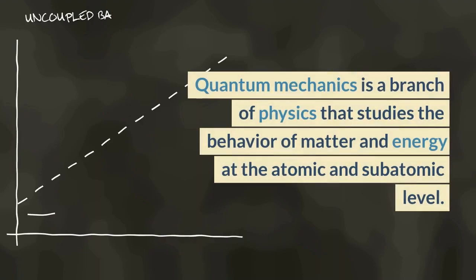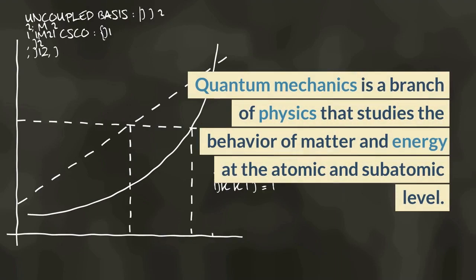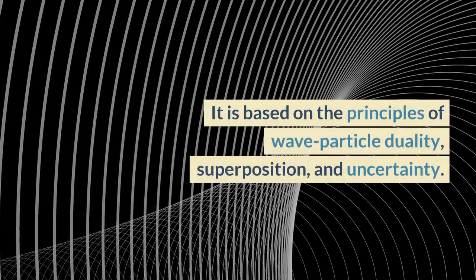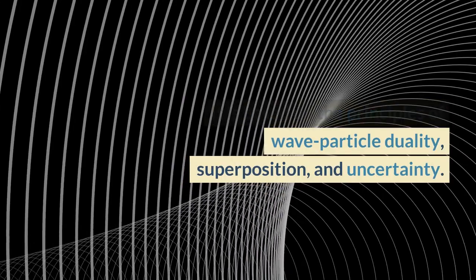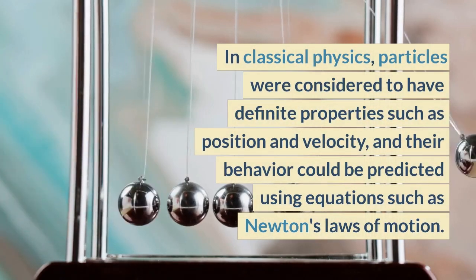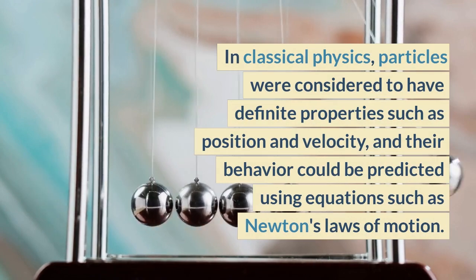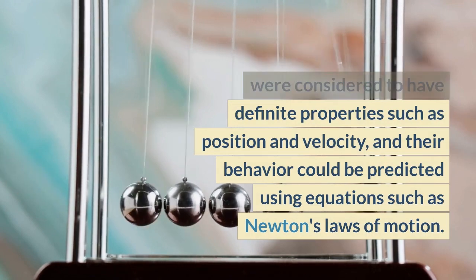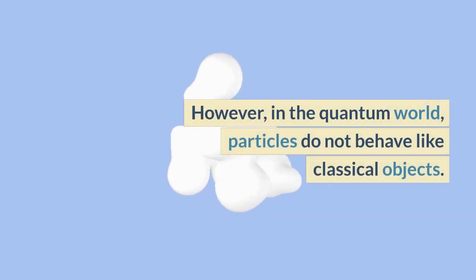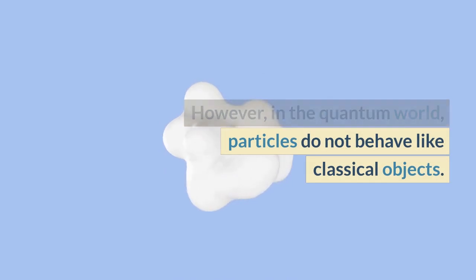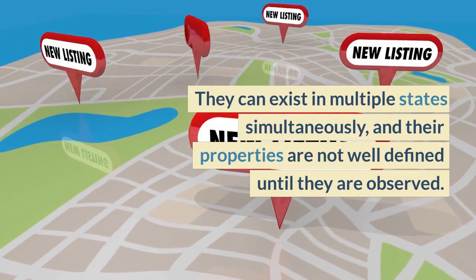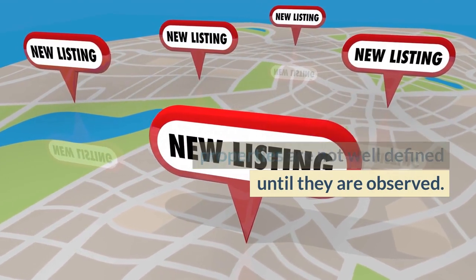Quantum mechanics is a branch of physics that studies the behavior of matter and energy at the atomic and subatomic level. It is based on the principles of wave-particle duality, superposition, and uncertainty. In classical physics, particles were considered to have definite properties such as position and velocity, and their behavior could be predicted using equations such as Newton's laws of motion. However, in the quantum world, particles do not behave like classical objects. They can exist in multiple states simultaneously, and their properties are not well-defined until they are observed.